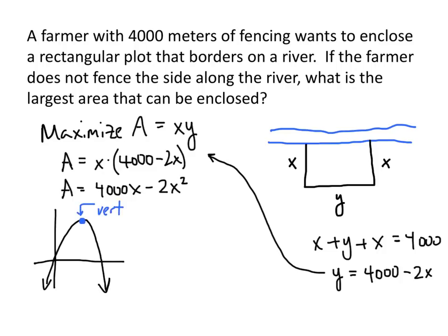So if we can find the vertex of this quadratic function, then that will tell us how to maximize our area. And as you might remember, the x-coordinate of the vertex is negative b divided by 2a.